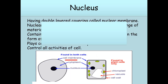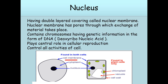Nucleus. It has a double-layered covering called the nuclear membrane. The nuclear membrane has pores through which exchange of material takes place. It contains chromosomes having genetic information in the form of DNA. It plays a central role in cellular reproduction and controls all the activities of the cell.